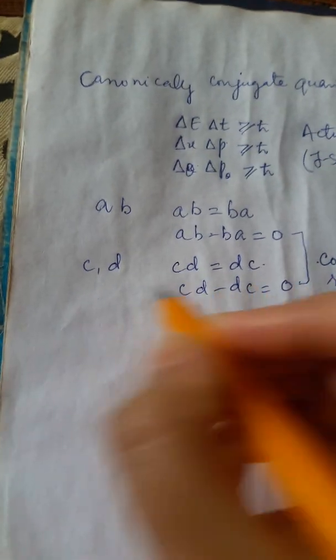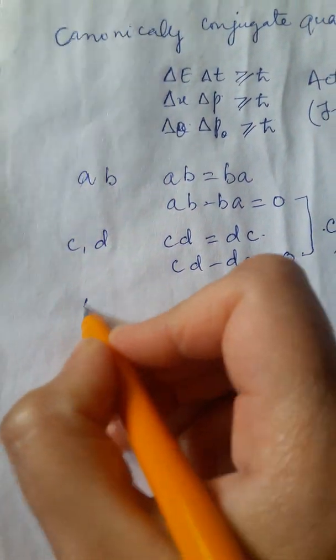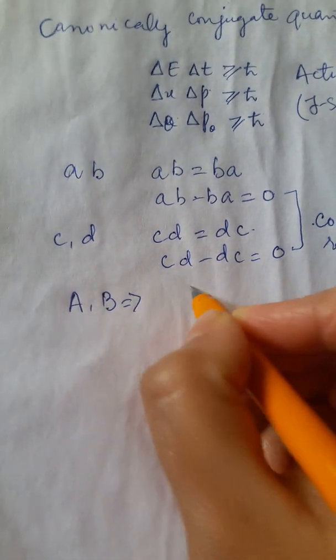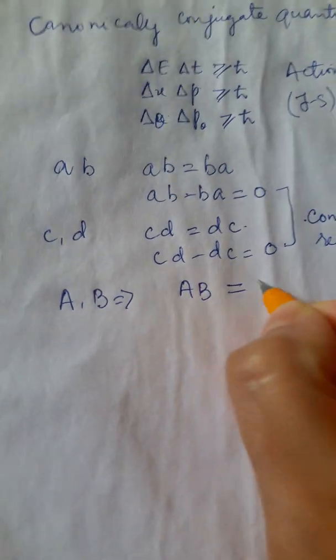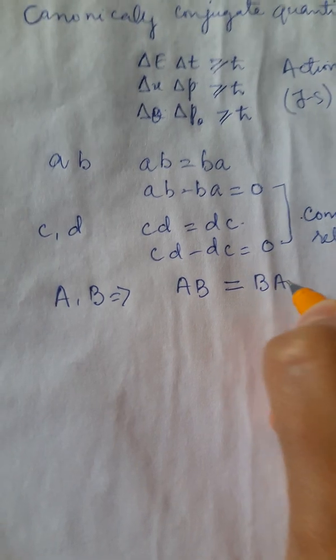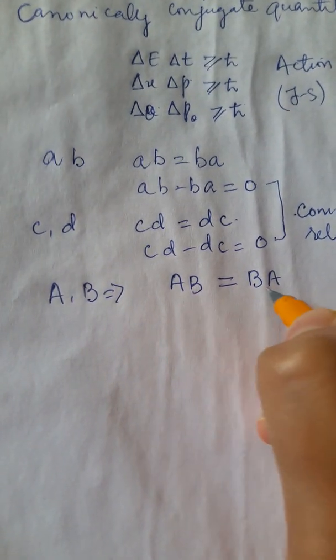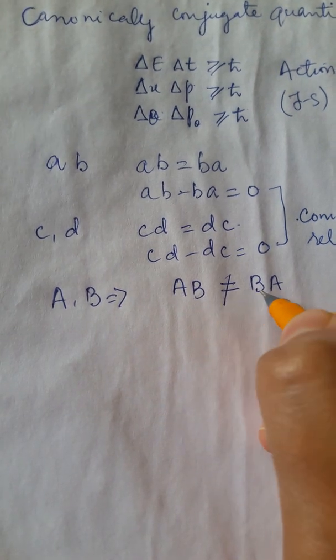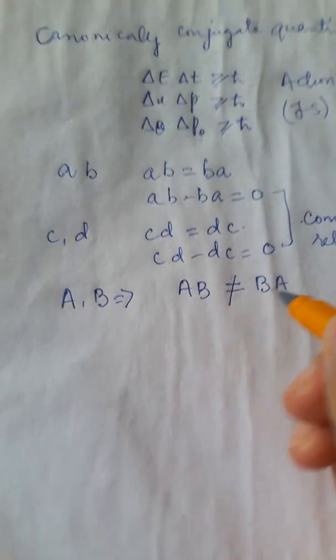Now, what about two matrices, say A and B? Is the product of AB same as that of BA? Well, in general, we know that about matrices, this is not true. Matrices do not obey the law of commutation.